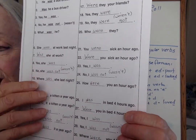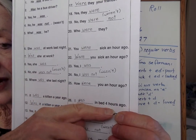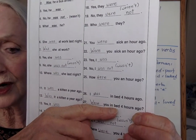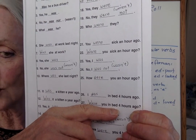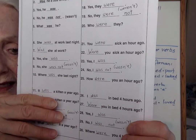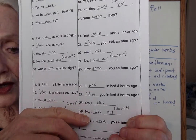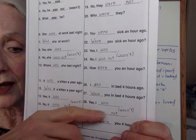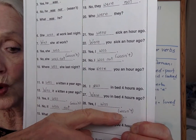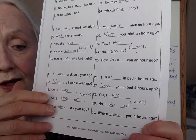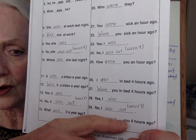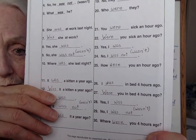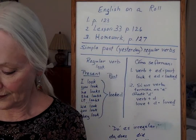And number twenty-six: I was in bed four hours ago. Were you in bed four hours ago? Yes, I was. Or no, I was not — or no, I wasn't. And then the last: where were you four hours ago? The answer would be: I was in bed four hours ago. So those are our homework for last time.